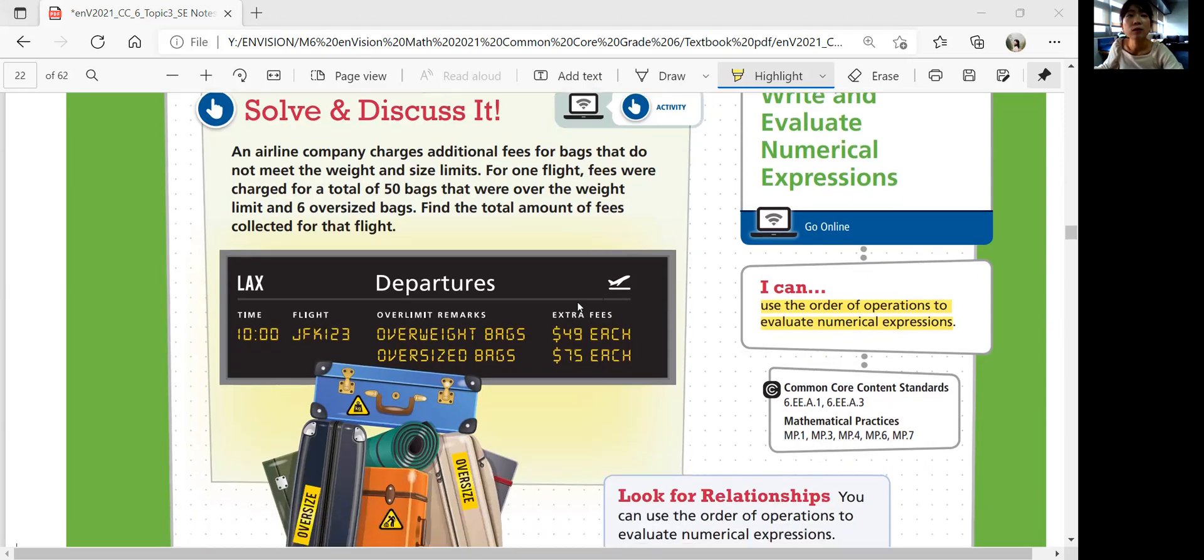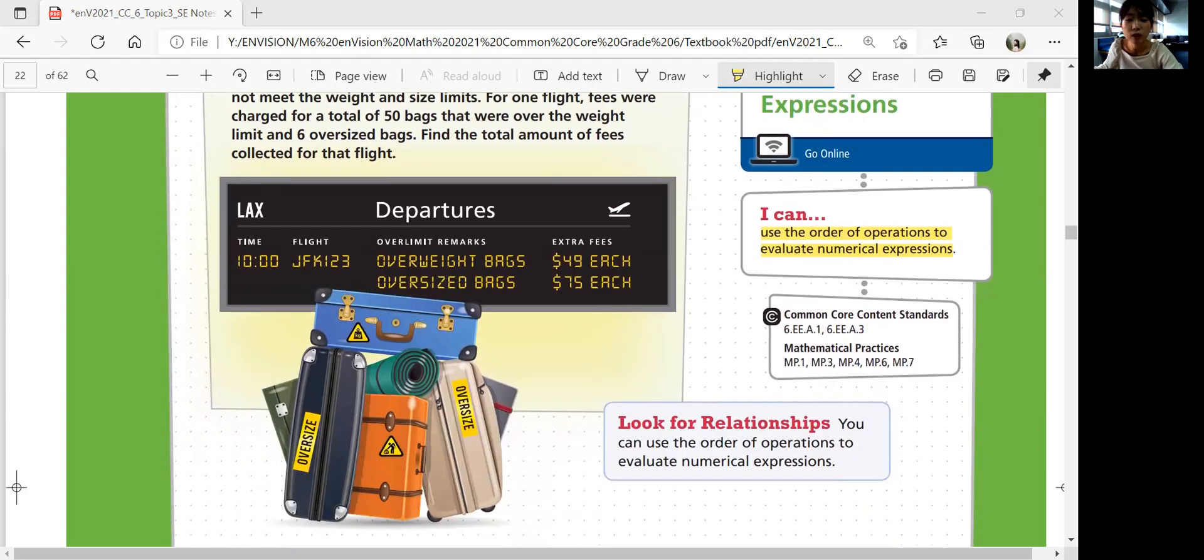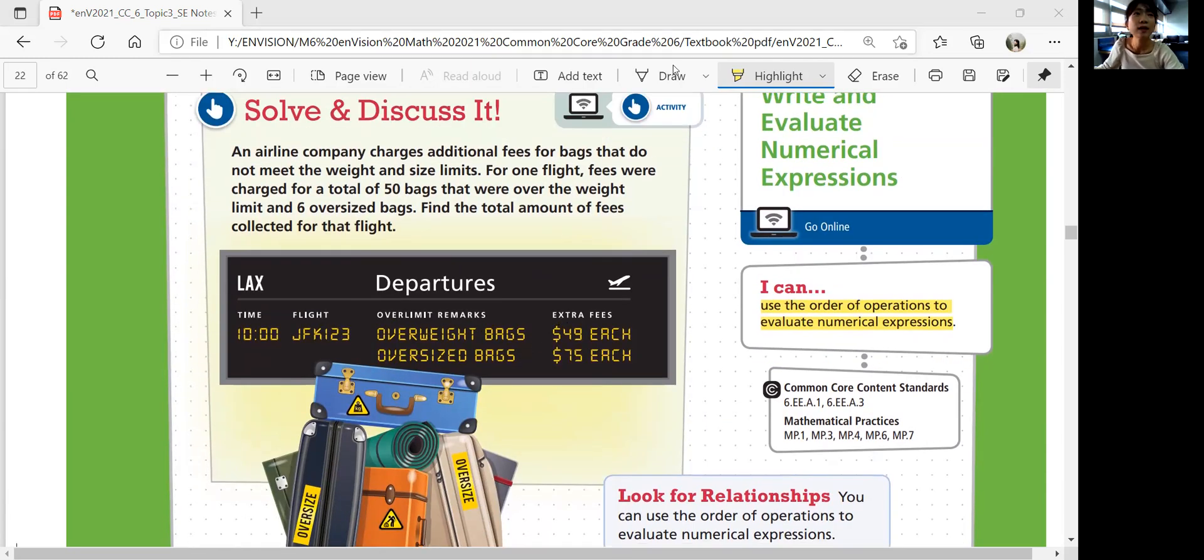So we got overweight bags that cost $49 each and oversized bags that cost $75 each. You can use the order of operations to evaluate numerical expressions. How can we do that? How many overweight bags do we have again? Highlight the important facts. 50 bags that were over the weight, which are $49 each. So you multiply 50 by 49. And you have six oversized bags that are $75 each. So you multiply 6 times 75.